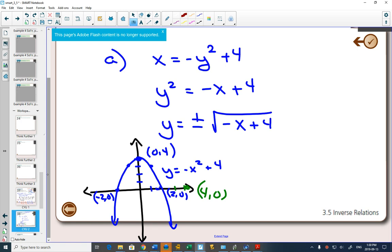negative 2, 0, and 2, 0, switch the x and the y, and I'll get 0, 2 and 0, negative 2. I can use that trick of turning my paper sideways to flip now that I've got some points.